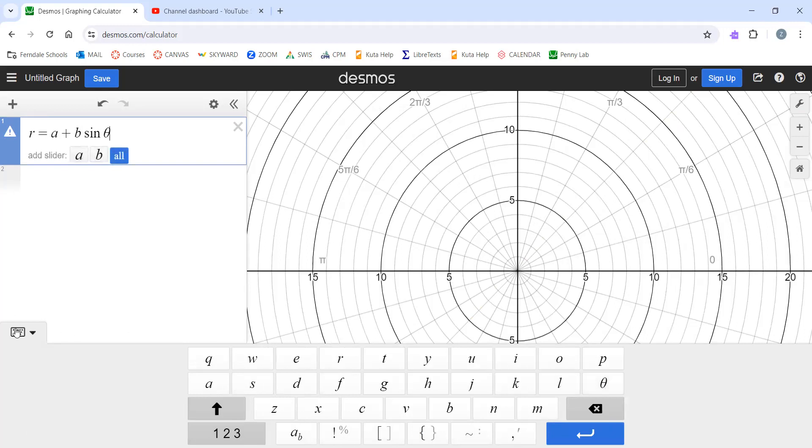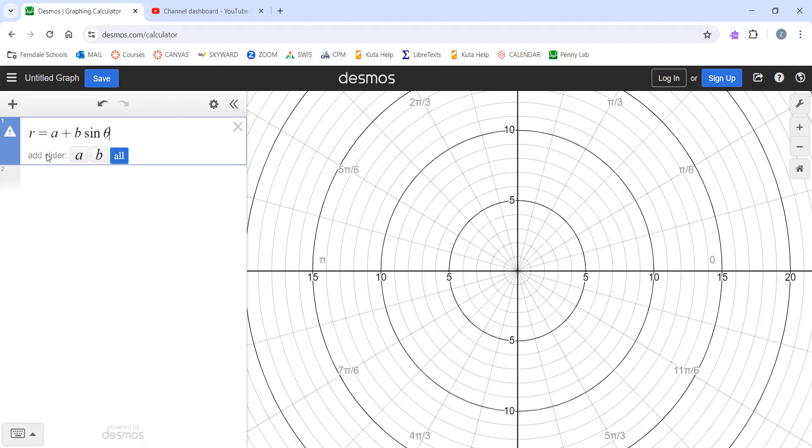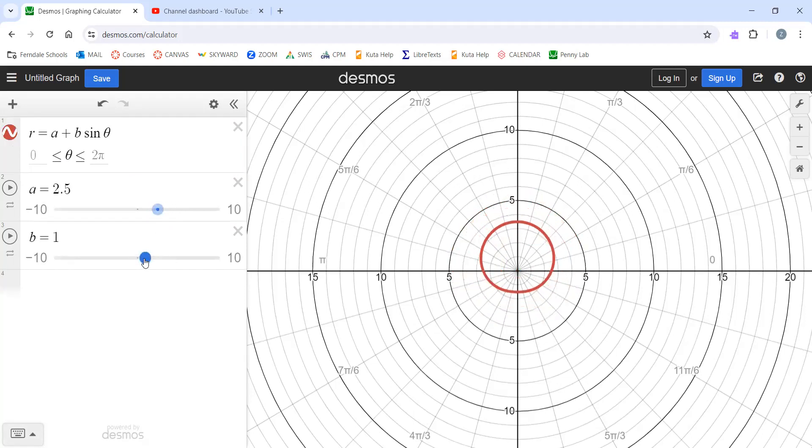All right. I'm hiding my keypad here. So it's not graphing anything because it does not know what A or B are. So I'm going to add sliders for both A and B. And now I can see this is my lemniscate. And now I can adjust my slider to see what that does to my graph.